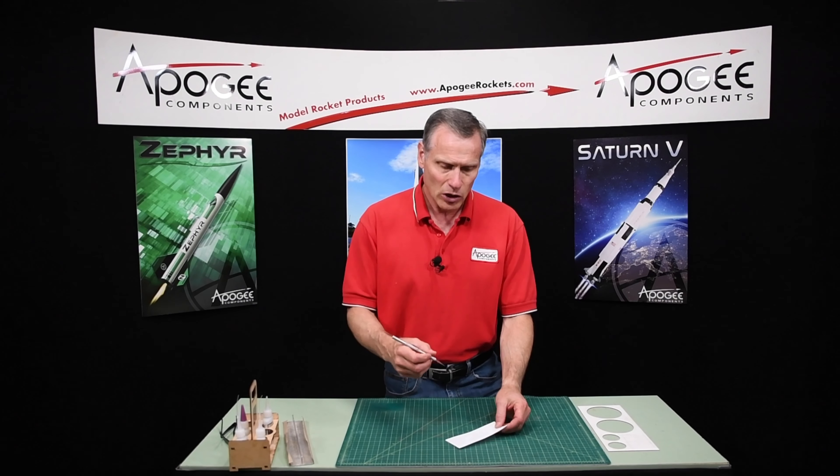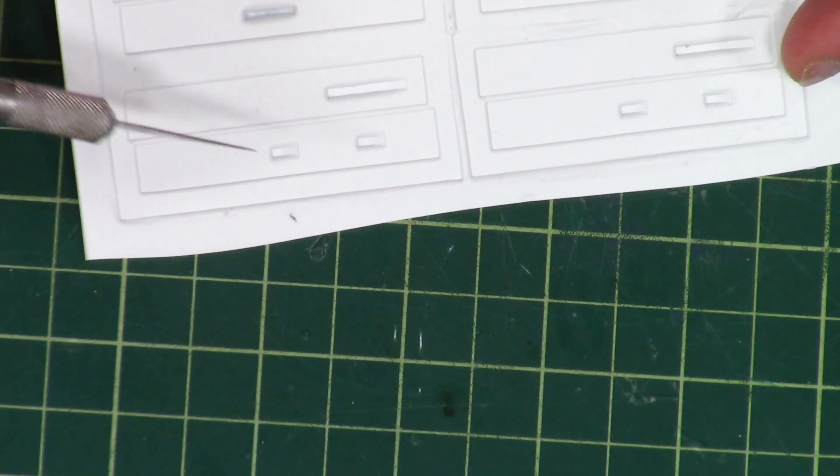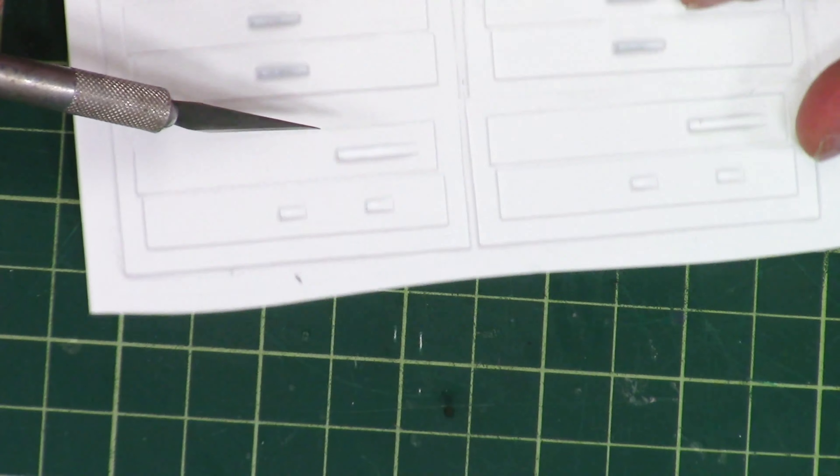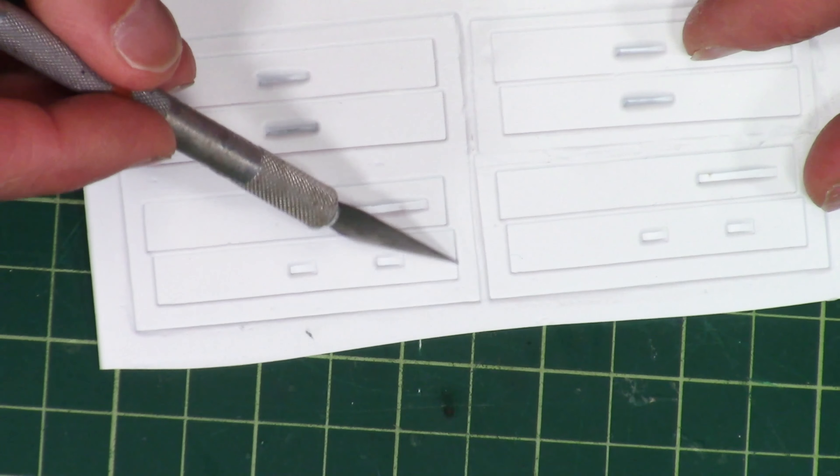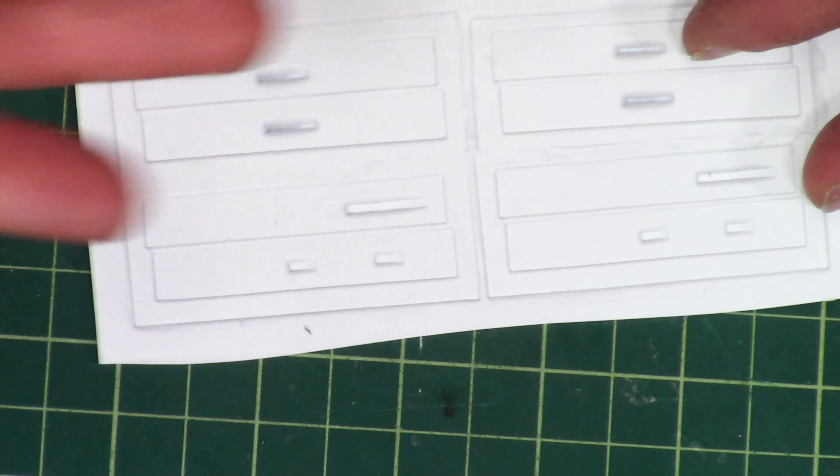We're now going to cut out the antenna panels, which are these right here. And cutting these is the same as we did before with the Vacuform Wraps. We do them from the back side.